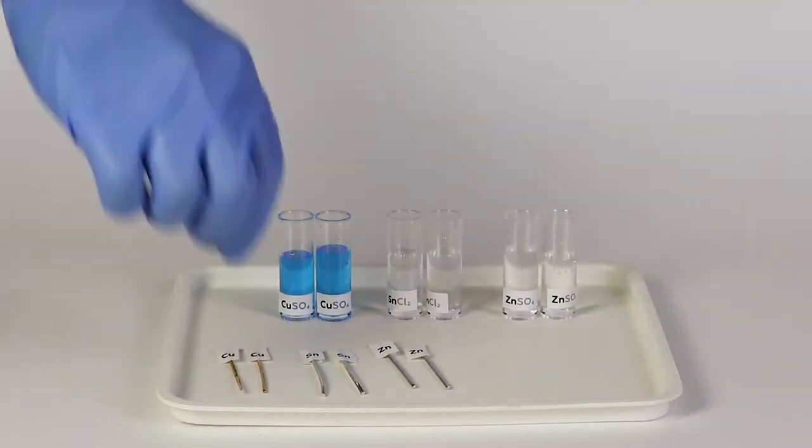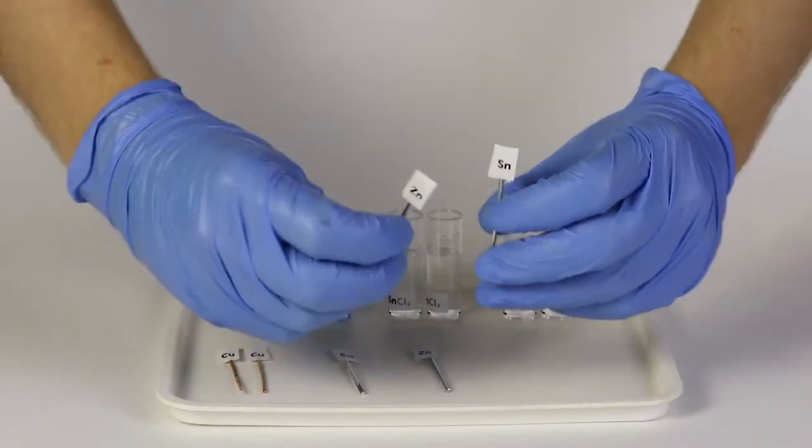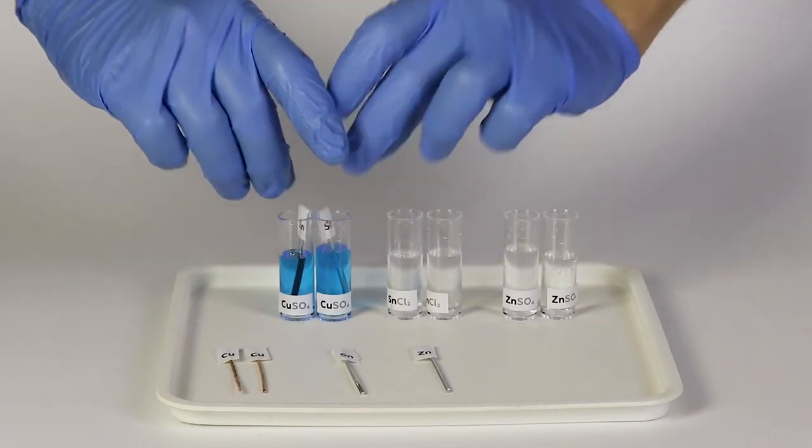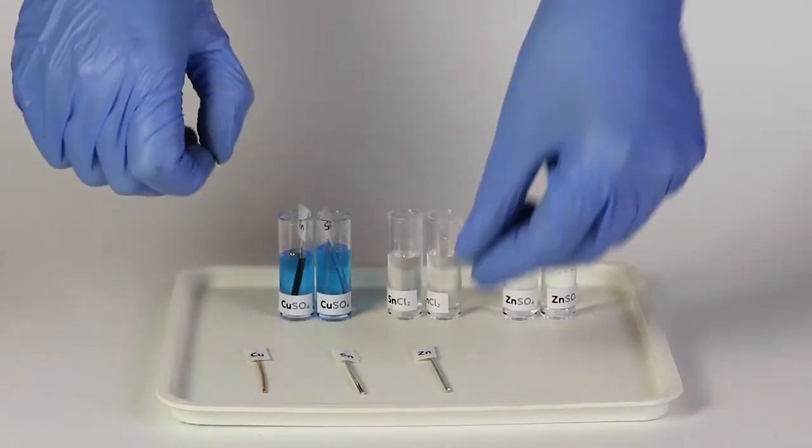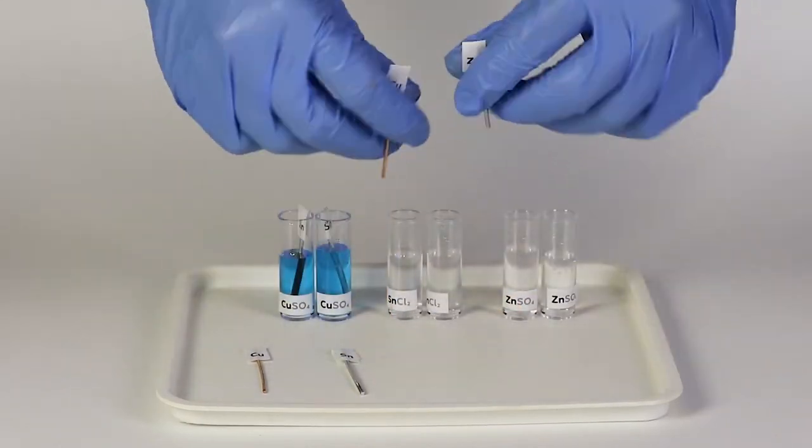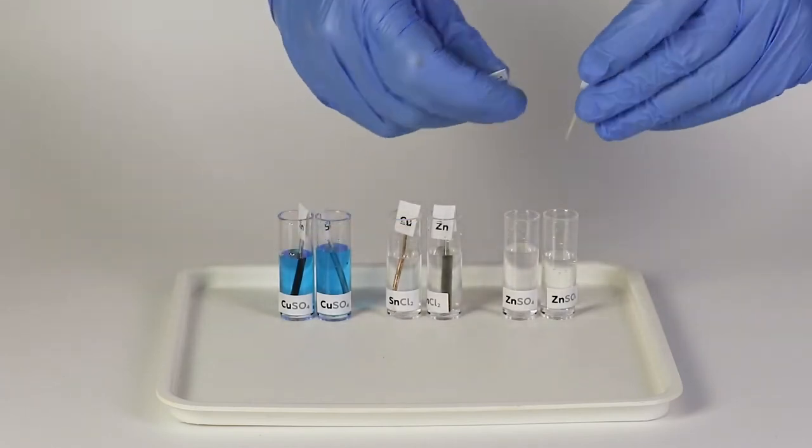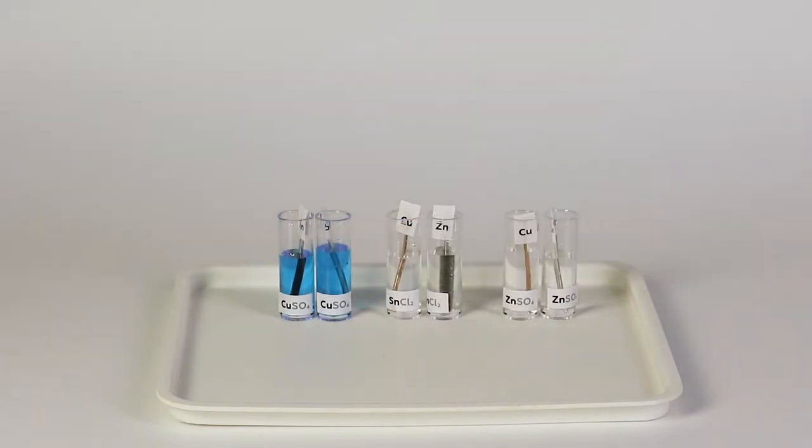Put a piece of zinc and tin into the solution of copper sulfate. Put a piece of copper and zinc into the solution of tin chloride. And finally, put a piece of copper and tin into the solution of zinc sulfate.